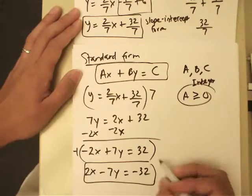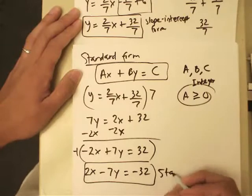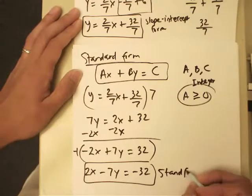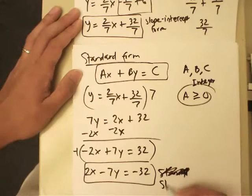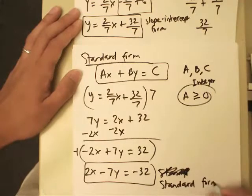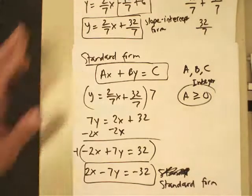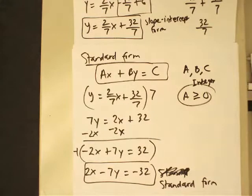So now here is what we call our standard form. Well, if I can spell it correctly. Standard form. So there you have it. I give you all three forms, starting with the point-slope form, change it to slope-intercept, and end up with the standard form.